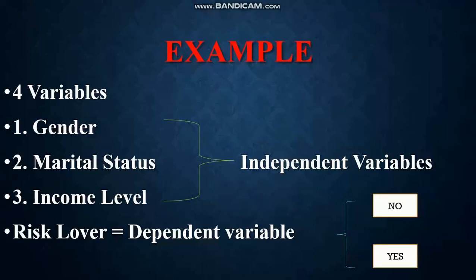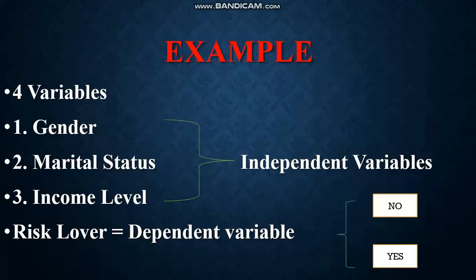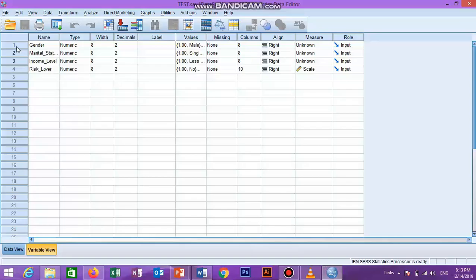For the binomial logistic regression in SPSS, we are considering an example where we have four variables. The first is gender, categorized into male and female. The second variable is marital status and the third is income level. All three are independent variables. The fourth variable is risk level, which is the dependent variable. Investors were asked whether they like risk during investment, responding yes or no.